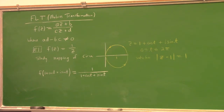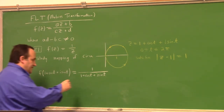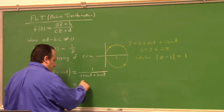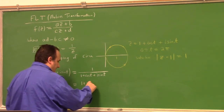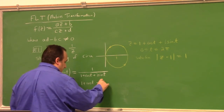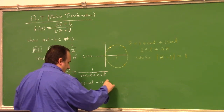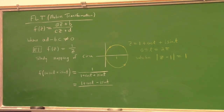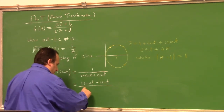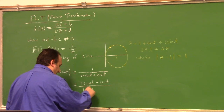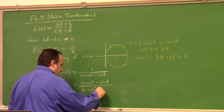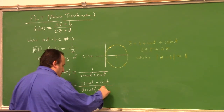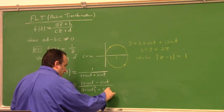I'd put it into Cartesian form to better understand it. So multiply numerator and denominator by the conjugate, getting (1 + cos(t) − i·sin(t)) over (1 + cos(t))² plus sin²(t) in the denominator.